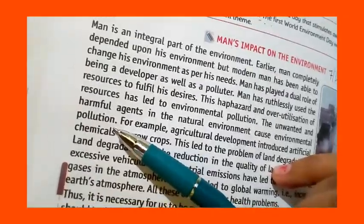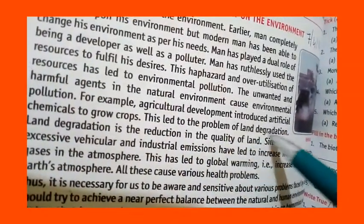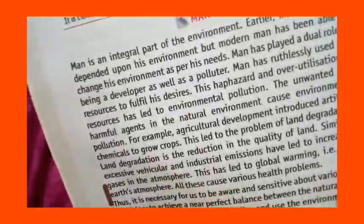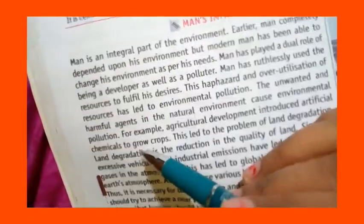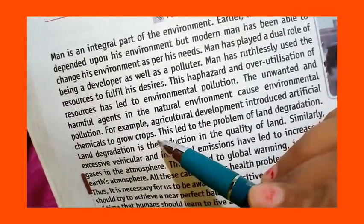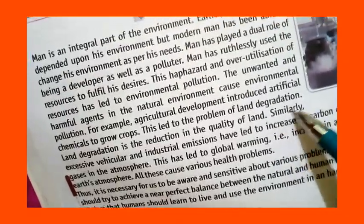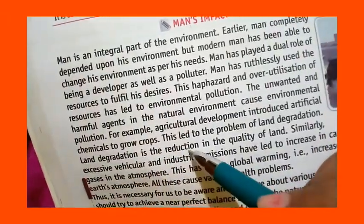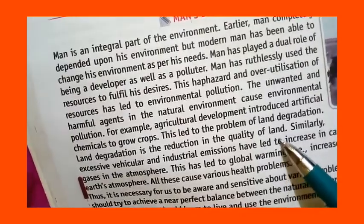For example, agricultural development has introduced artificial chemicals into farming. These chemicals used to grow crops can be harmful and have led to the problem of land degradation, which is the reduction in the quality of the land.